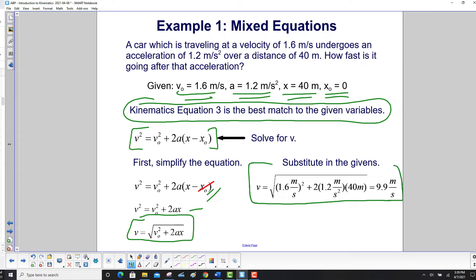Then substitute in all the givens, do the multiplication and the addition, take the square root, again take the square root, don't forget that, and you get 9.9 meters per second.